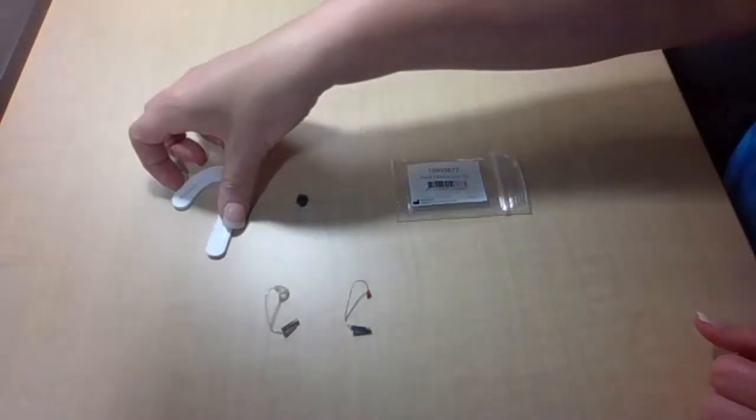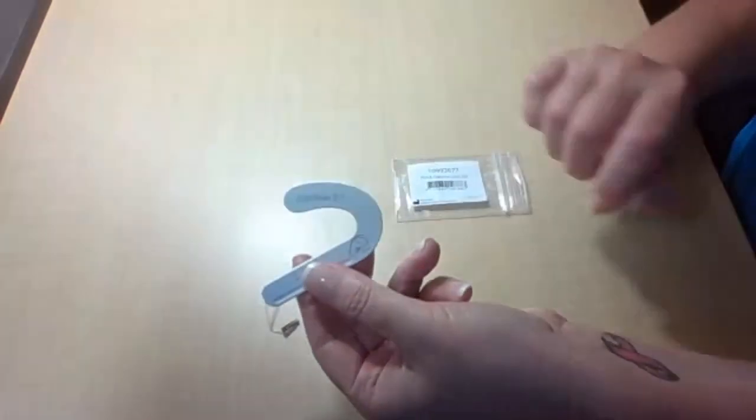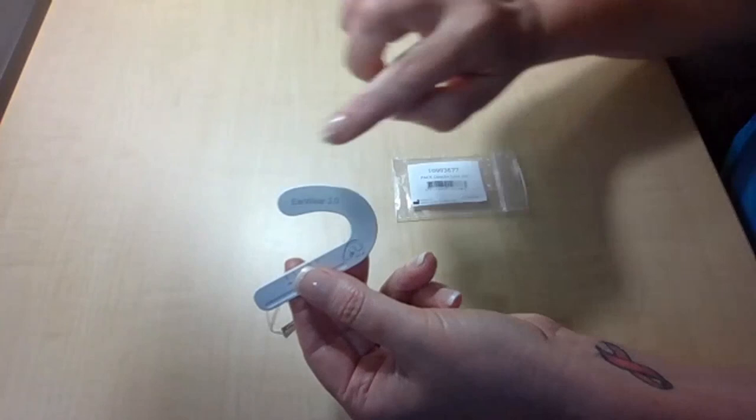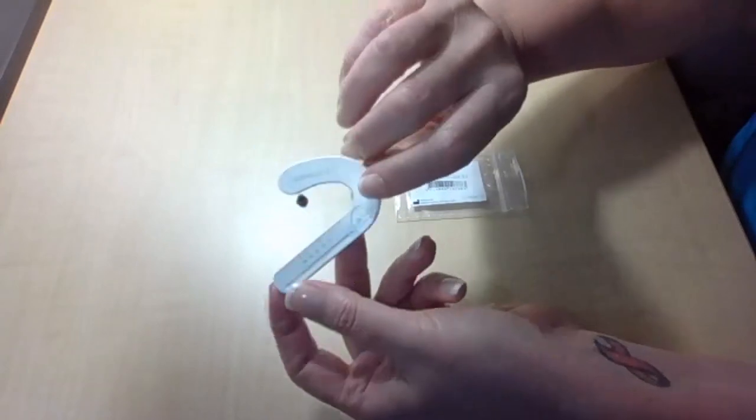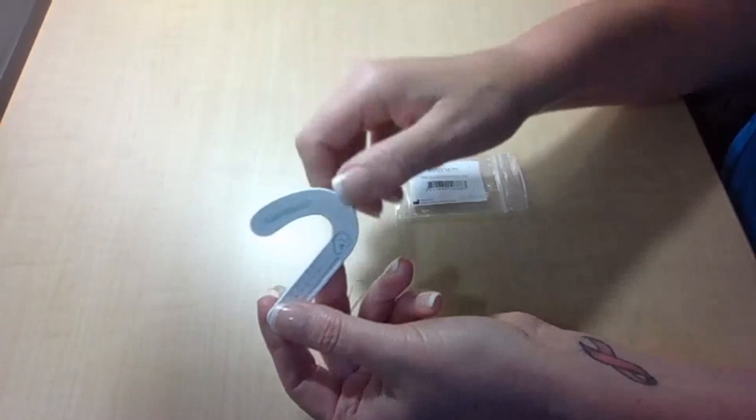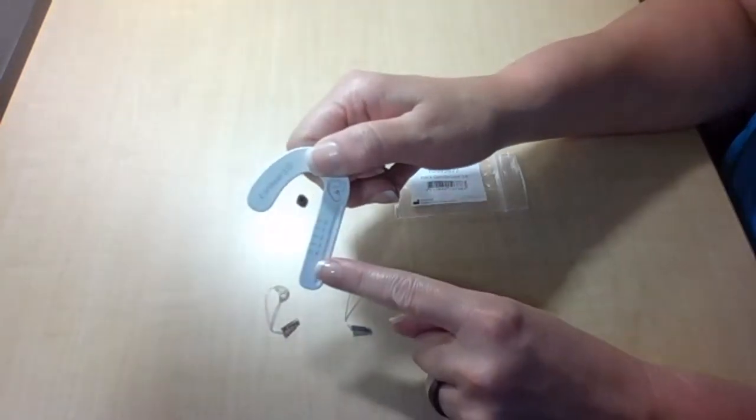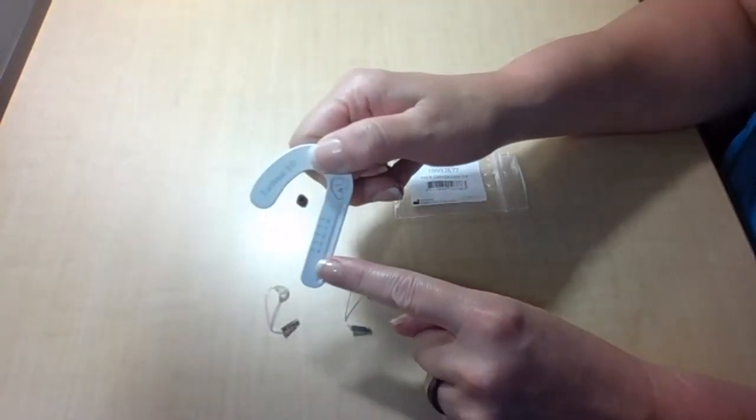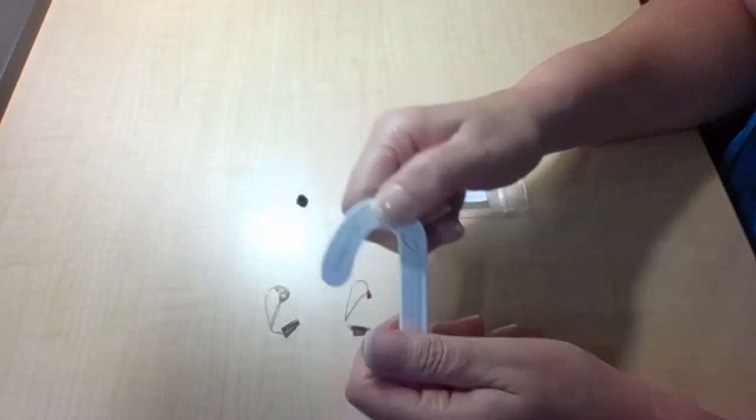With EarWare 3.0, you do have standard sizing for both those thin tubes and receivers, so you're going to use the new measuring tool that's marked with EarWare 3.0. And that shows sizes 0 through 4. Again, that's going to be standard across both thin tubes and MiniReceivers.